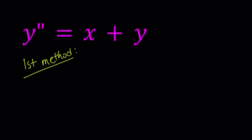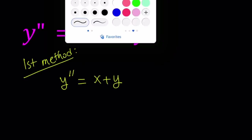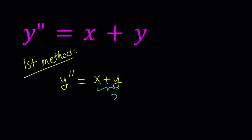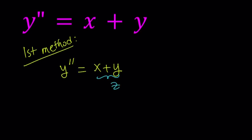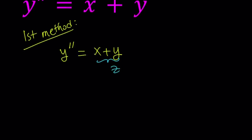For our first method — and we used this method before — I'm going to use substitution. Since we have x plus y on the right hand side, I would like to replace x plus y with z. So now I have x plus y equals z.